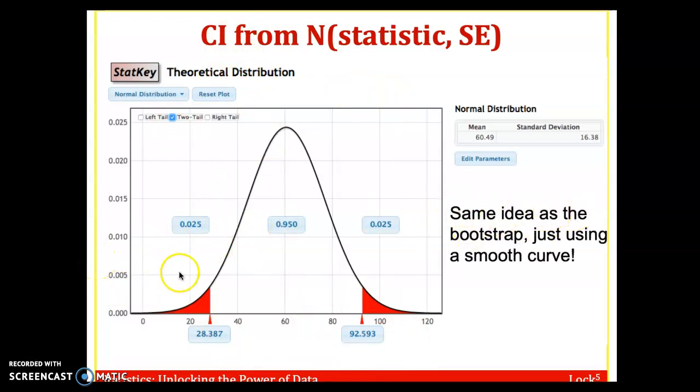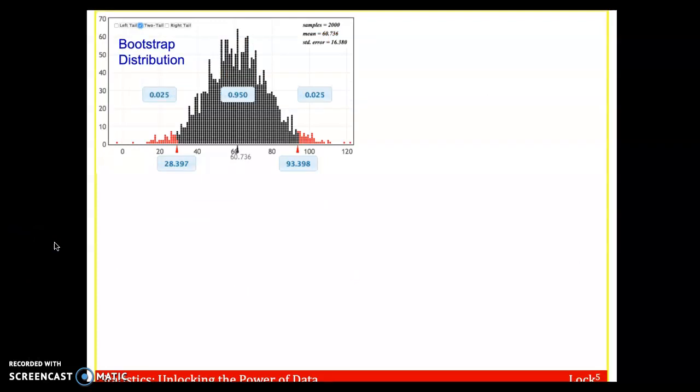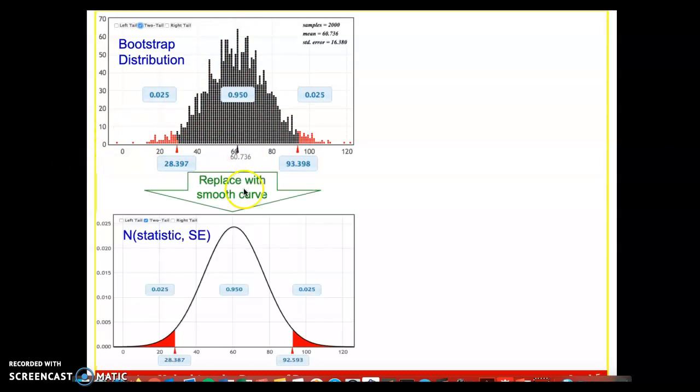And as I put right here, it's the same exact idea as that bootstrap idea we're doing in chapter three. But we're going to use a smooth curve. So again, looking before, kind of summarizing what we just did in the last couple slides. We had the bootstrap distribution here done in StatKey, the chapter three method. We could replace this idea of a simulation with a smooth curve.